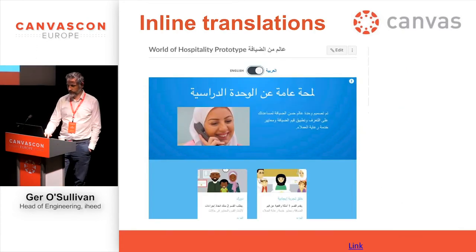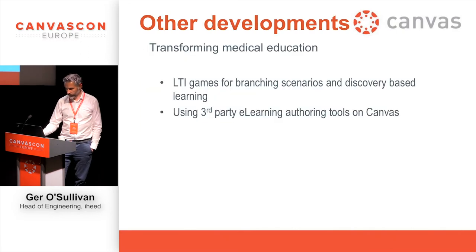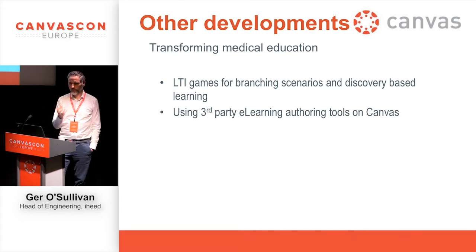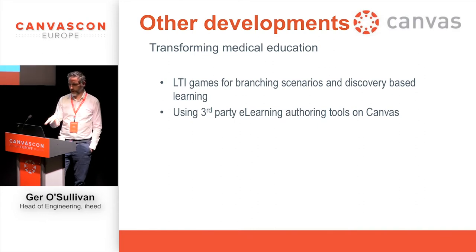For one course here we have English-Arabic translations in real time. When you switch between English and Arabic, the images go from left-to-right or right-to-left, which is really cool. We're also working on some really cool stuff at the moment — a discovery-based learning game that works within LTI so we can plug it into Canvas; it's like an interactive comic book. And we're really interested in third-party e-learning authoring tools like Articulate Rise and Storyline, working out ways to get content authored in those systems into Canvas, and we've had some good success with that.